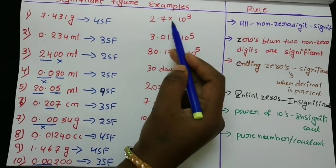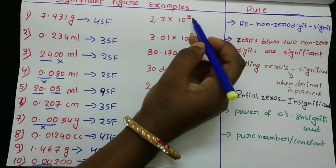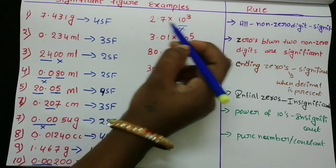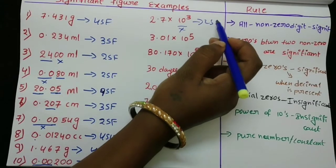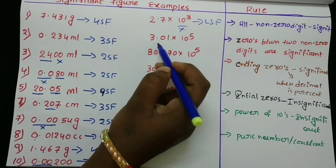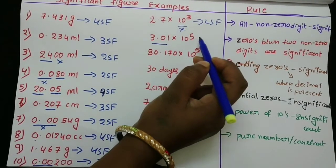2.7 × 10 to the power — the power of tens is insignificant. So here there are two significant figures. And in the next example, there are three.